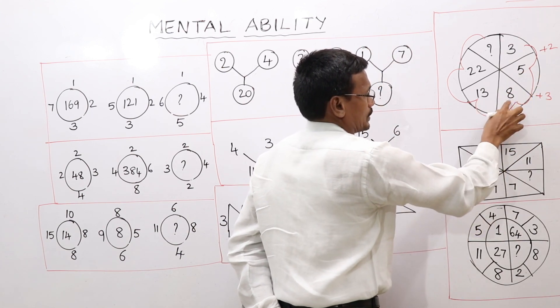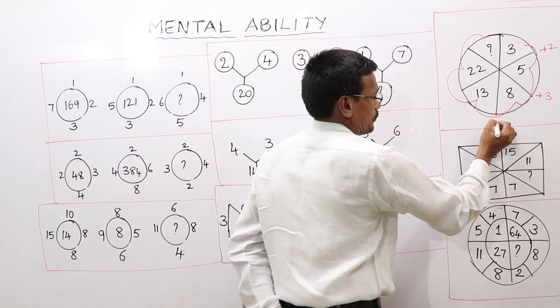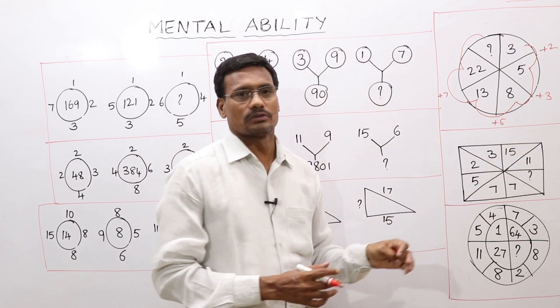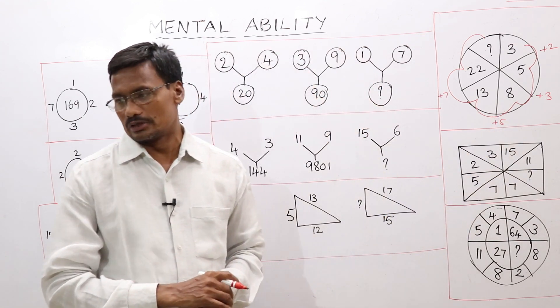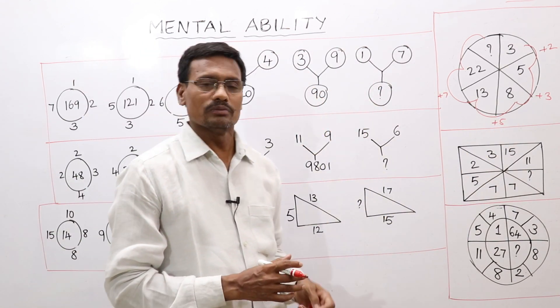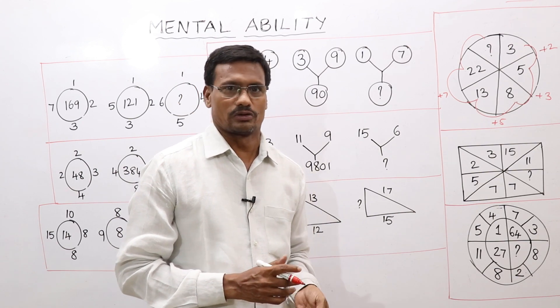8 plus 5 is 13. So if we want to think about this, we can easily catch the solution. Here we have a pattern with differences increasing.